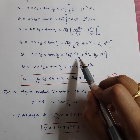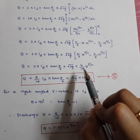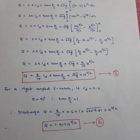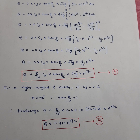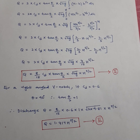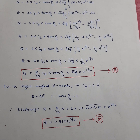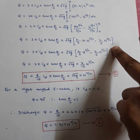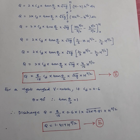So Q = (8/15)·CD·tan(theta/2)·root(2g)·H^(5/2) is the expression for discharge through a triangular or V-notch. The only tricky part is the integration step, but the power rule x^(n+1)/(n+1) is all you need to remember to arrive at this formula.